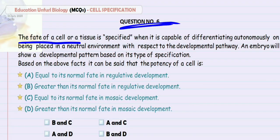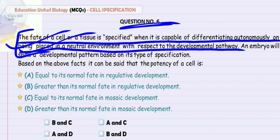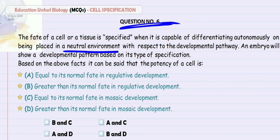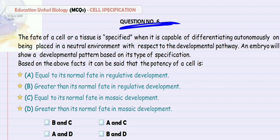Question number 6. The fate of a cell or a tissue is specified when it is capable of differentiating autonomously on being placed in a neutral environment with respect to the developmental pathway. This is the definition of cell specification which is exactly given in Gilbert. If we put a cell in a neutral environment, the environment does not determine the fate — the fate of the cell depends entirely on the cell itself.